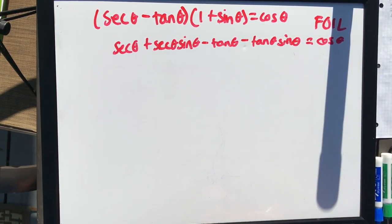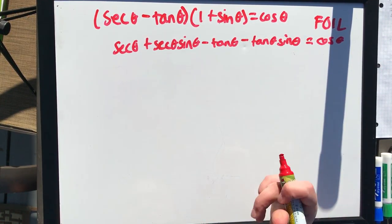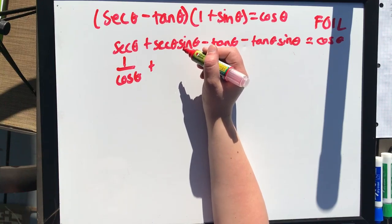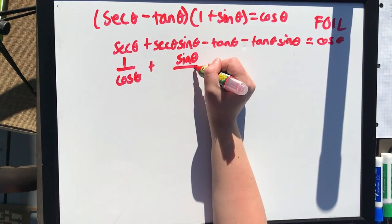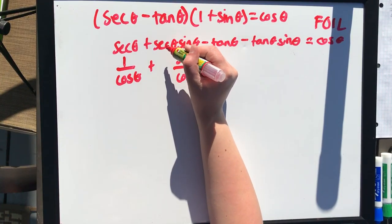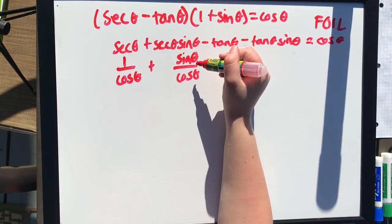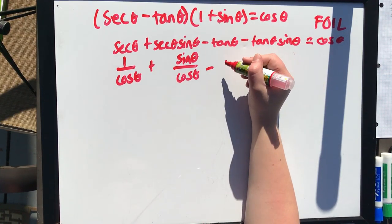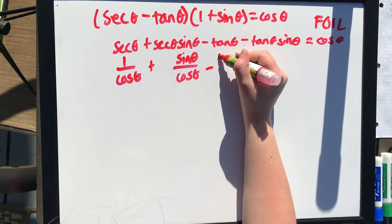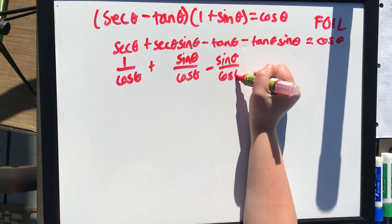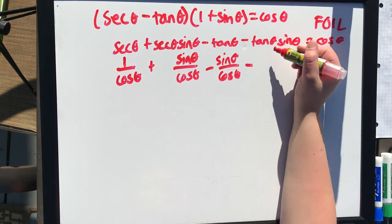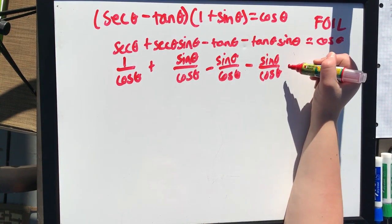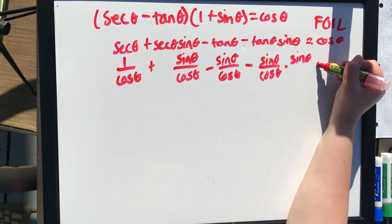Now let's convert into forms of sine and cosine. We get 1 over cosine theta plus sine theta over cosine theta — because secant theta times sine theta becomes (1 over cosine theta) times sine theta, which is sine theta over cosine theta.